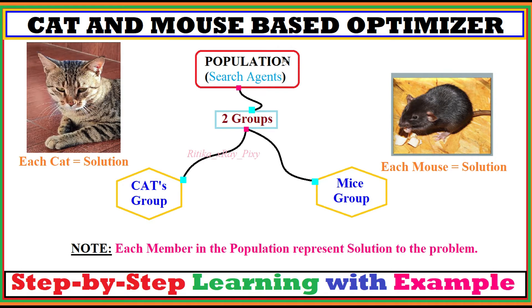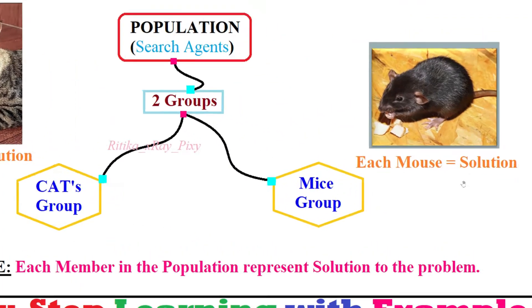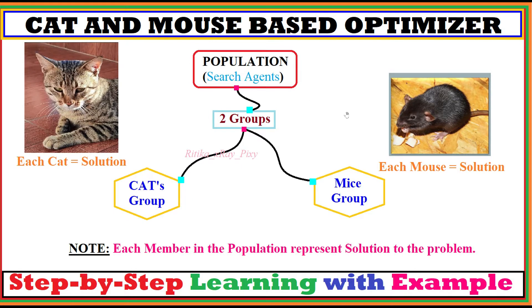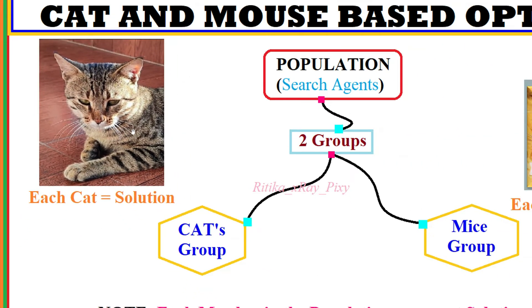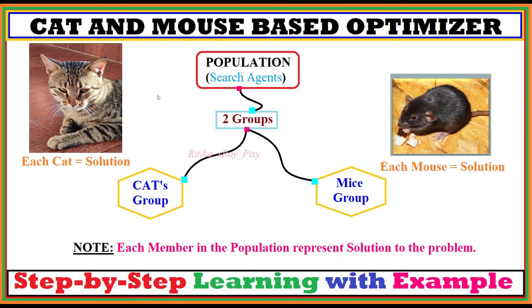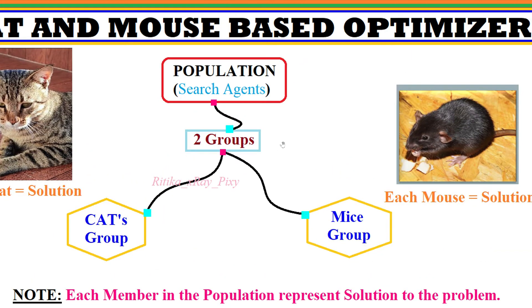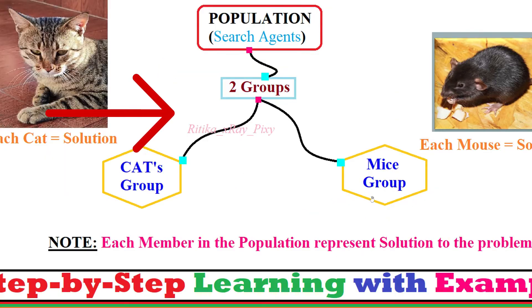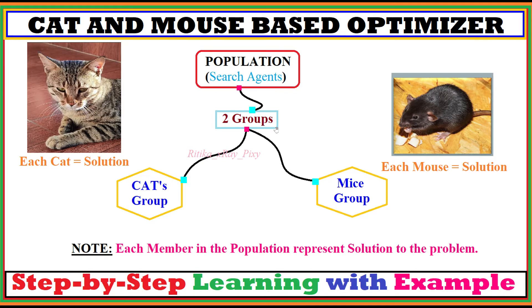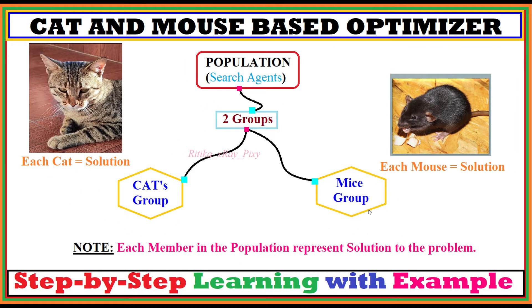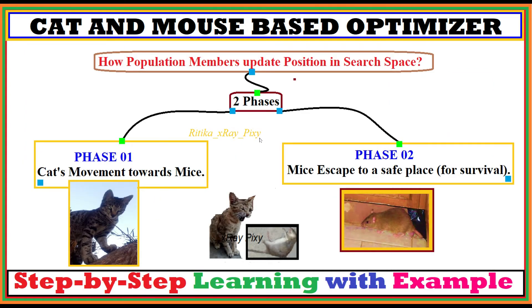In the population, each agent or member is a solution to the given problem — each cat is a solution and each mouse is a solution. So the population contains both cats and mice. While humans can easily distinguish between them, for the program or machine, we divide the population into two groups: a mice group and a cats group.